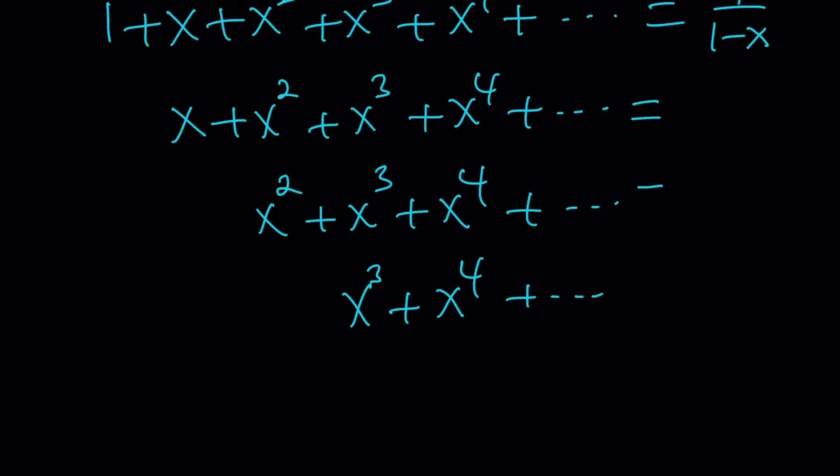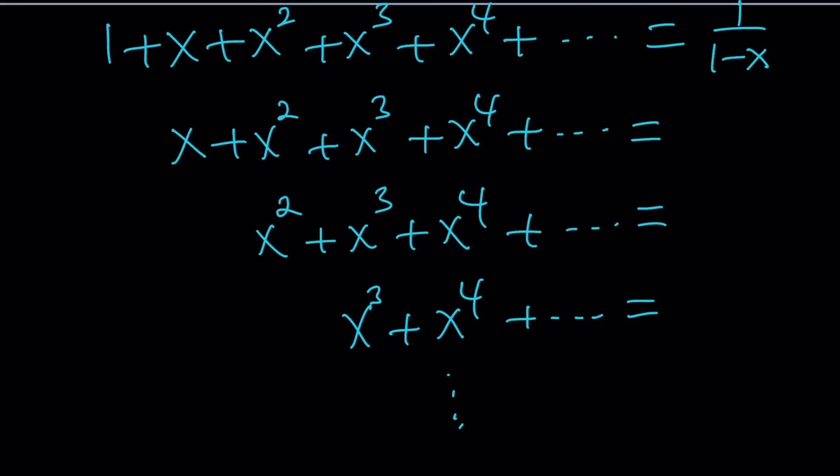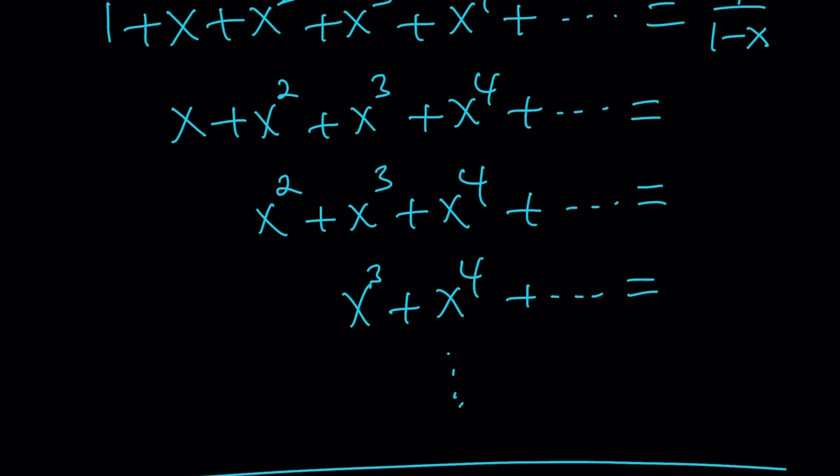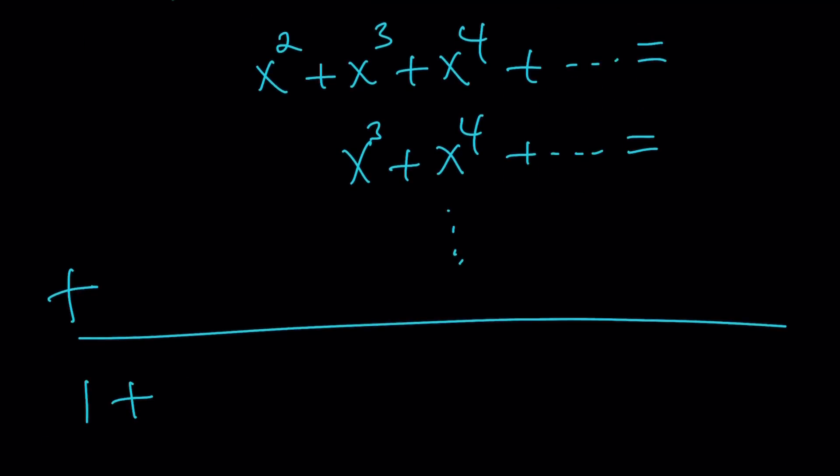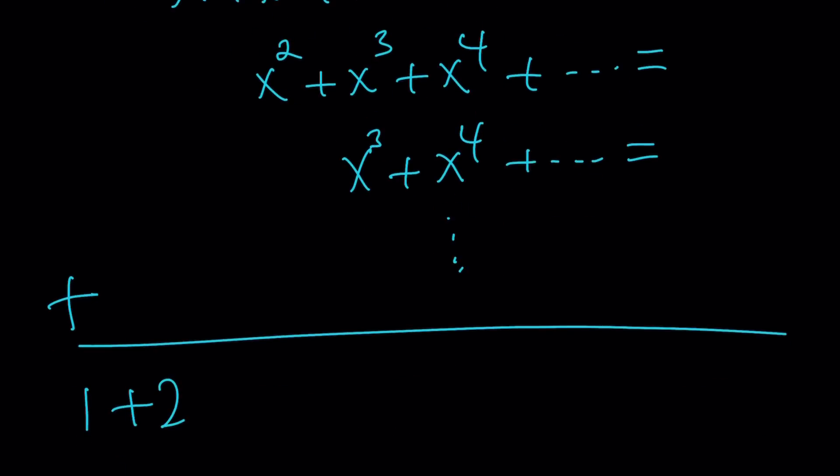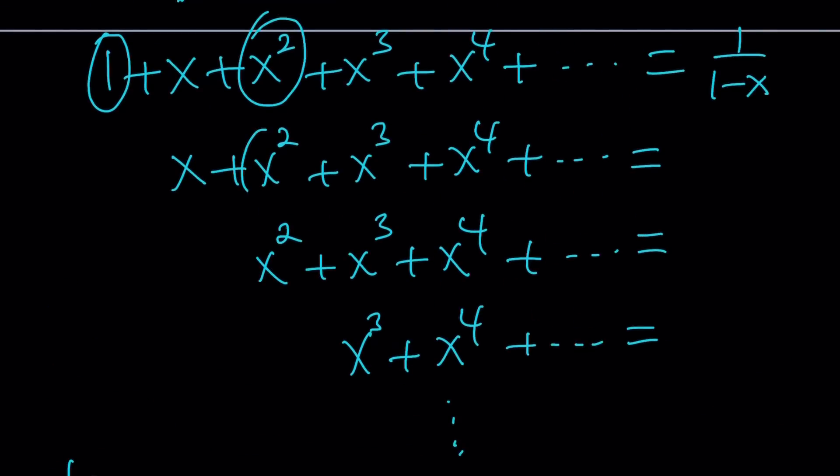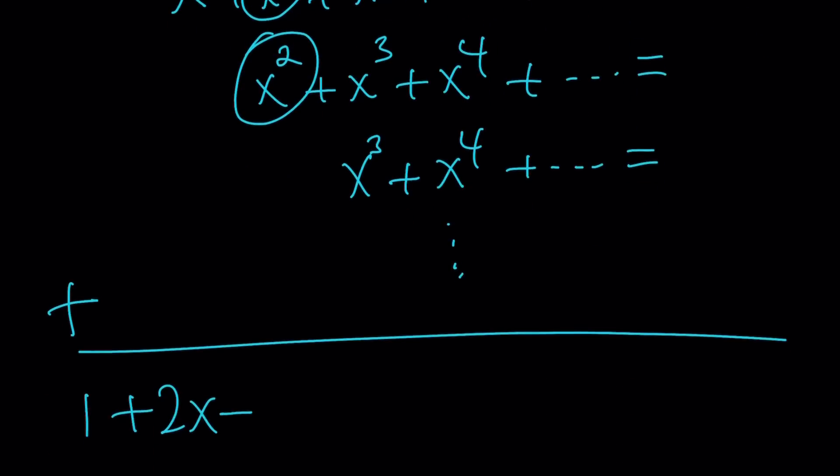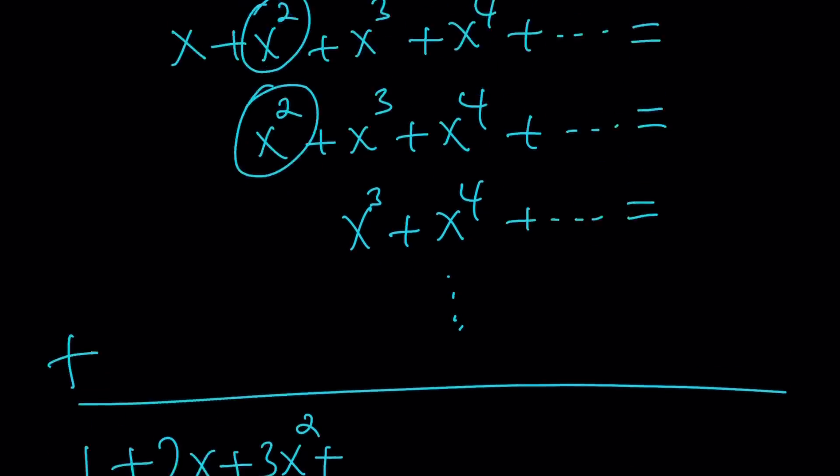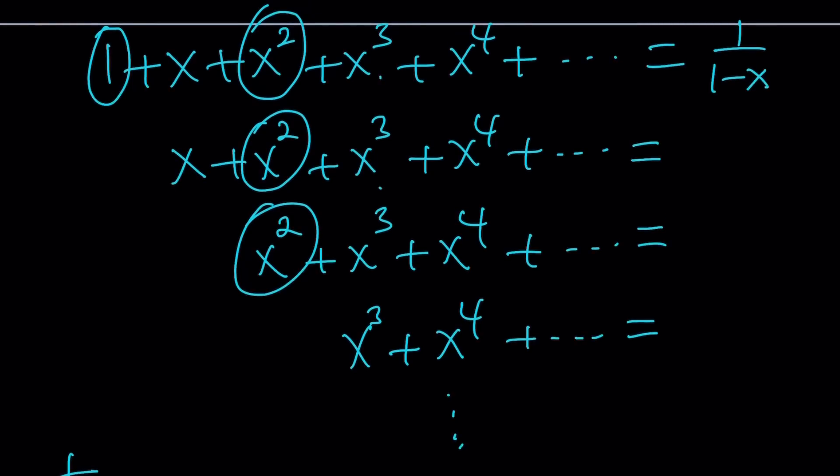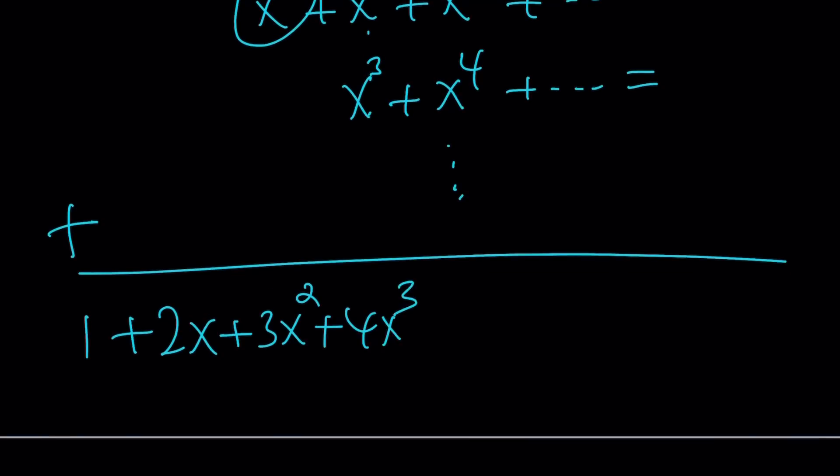So, by doing all these sums, obviously, infinitely many times. And that's what's cool about math. Like you can do something infinitely many times without doing it infinitely many times. All of these sums are going to be added. And we're going to be getting 1 plus 2x. x plus x. x squared plus x squared plus x squared is going to give us 3x squared. x cubed plus x cubed plus x cubed plus x cubed is going to give us 4x cubed. And guess what? This is the sum we're looking for. Awesome.